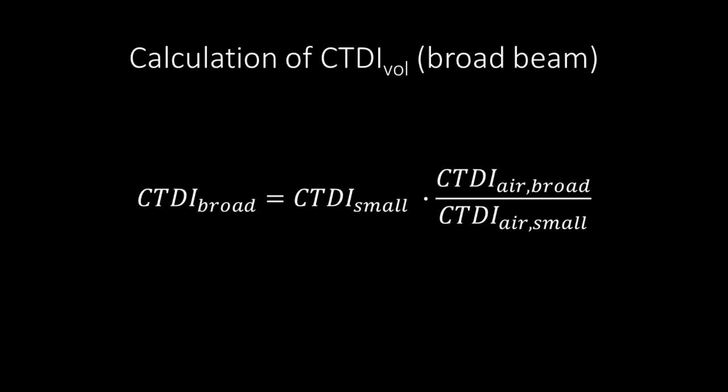The broad beam CTDI is obtained by multiplying the small beam reference CTDI by the ratio of the free in air CTDIs of the broad and small beams.